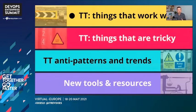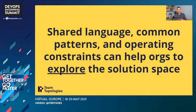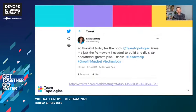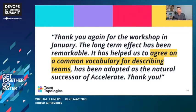Let's dive into what actually works well — specifically this idea of Team Topologies as a shared language, providing common patterns and operating constraints, and helping an organization explore the solution search space for technology and services. Team Topologies as a clear language with well-defined concepts really seems to help. For example, Kathy Keating from North America said: 'So thankful for the book Team Topologies — it gave me just the framework I needed to build a really clear operational growth plan.' We also heard from a large government client: 'It has helped us agree on a common vocabulary for describing teams and has been adopted as a natural successor of Accelerate.' Accelerate being the book published in 2018 by IT Revolution.